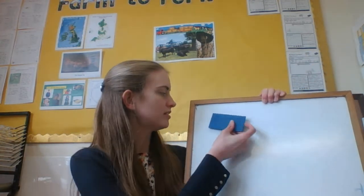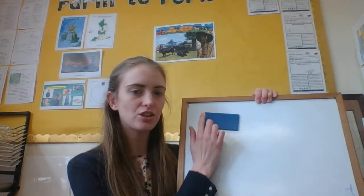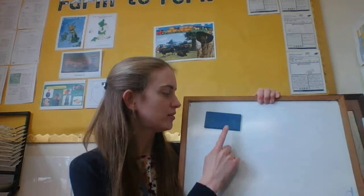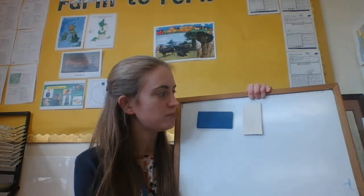Now perimeter, if you remember, is the distance around the edge of a shape. Now rectangles can come all different ways. If I put these any which way round, they are still rectangles. Okay, these are rectangles.